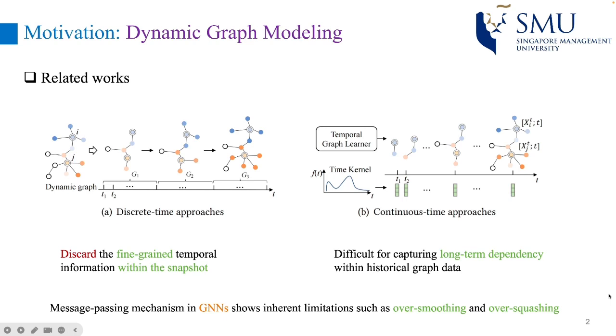Continuous approaches retain full temporal details, but capturing long-term dependency remains a difficult problem. Furthermore, many works rely on message passing GNNs which show limitations of over-smoothing and over-squashing.